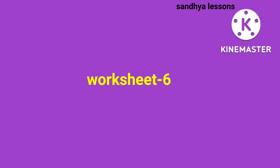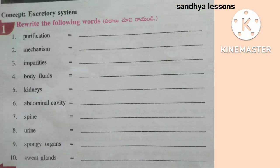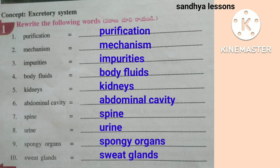Worksheet 6. First, rewrite the following words: purification, mechanism, impurities, body fluids, kidneys, abdominal cavity, spine, spongy organs, sweat glands.